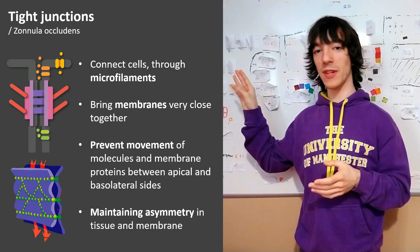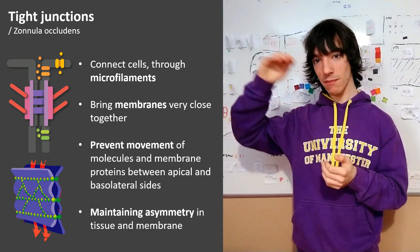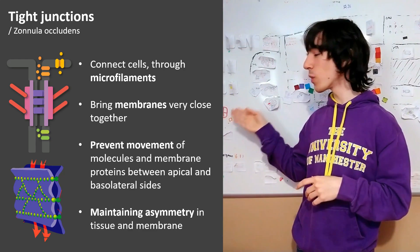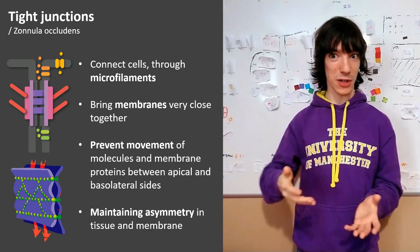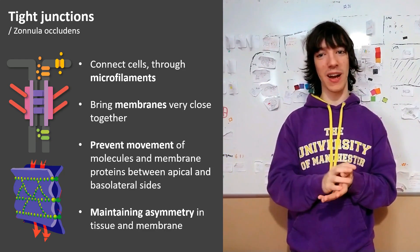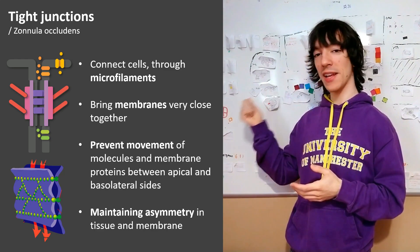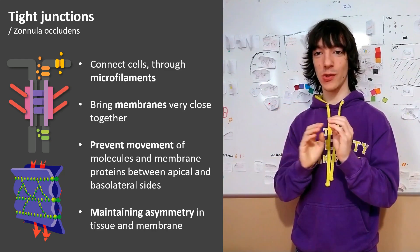For example, we have these orange proteins in the apical side of the cell, the top cell, and have these green proteins in the basolateral side of the cell, the rest of the cell, everything that is not apical. We find the tight junctions closest to the apical side.